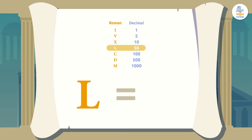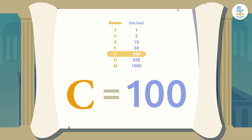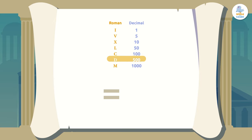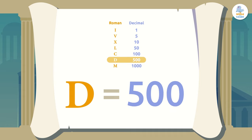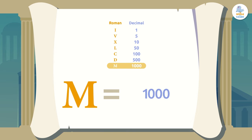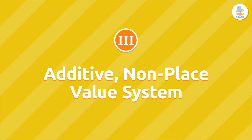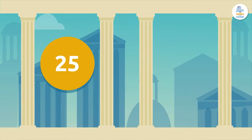The letter L has a value of 50, the letter C has a value of 100, the letter D has a value of 500, and finally the letter M has a value of 1,000.